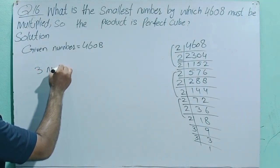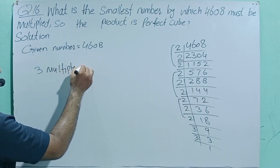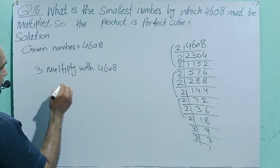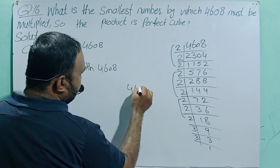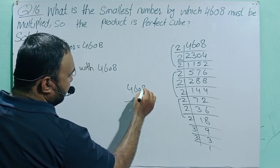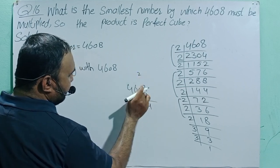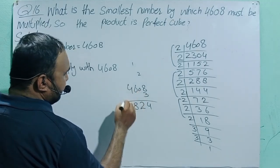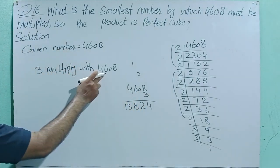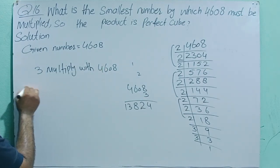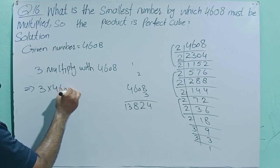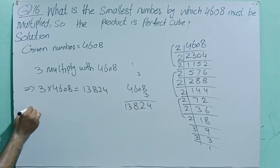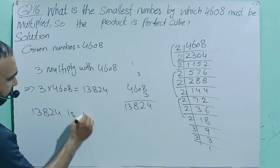So we multiply 3 with 4608. That implies 3 × 4608 = 13824. So 13824 is a perfect cube, and the smallest number to multiply 4608 by is 3.